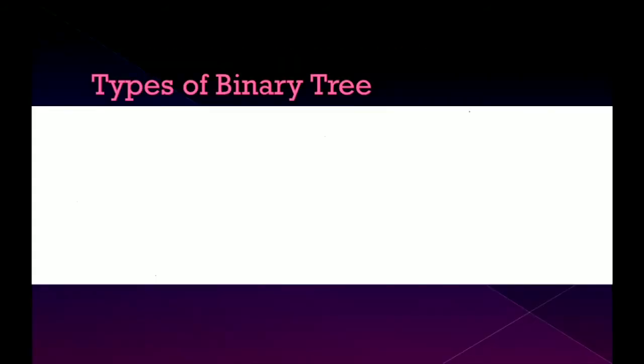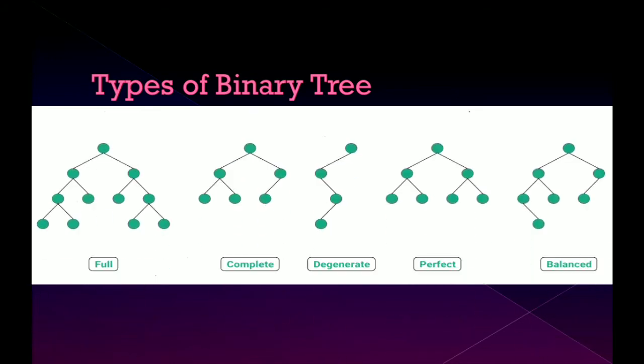Types of binary tree. There are five types of binary tree and if you look at this image, there are five types: Full, Complete, Degenerate, Perfect and Balanced.